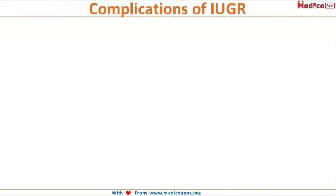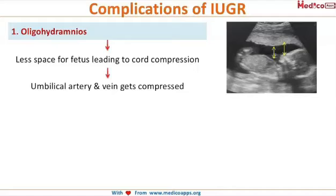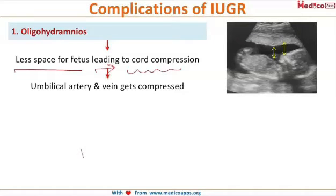The complications that we see in cases of IUGR: in all the conditions in which there is decreased blood flow to the fetus, they simultaneously cause oligohydramnios also. In oligohydramnios, overall there is less space in the uterine cavity and amniotic cavity, and this will lead to cord compression.